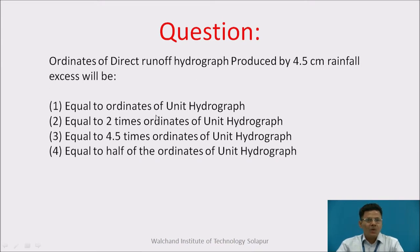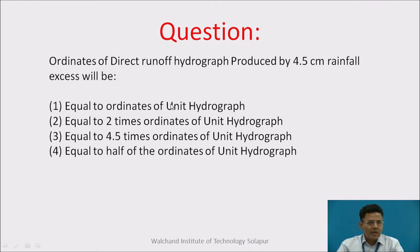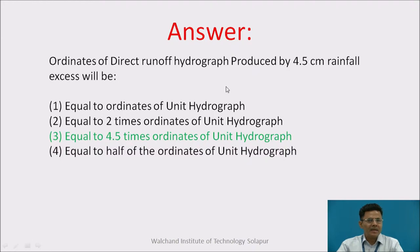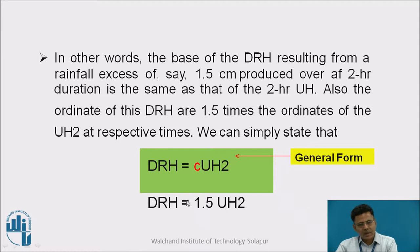A small question: ordinates of the direct runoff hydrograph produced by 4.5 centimeter rainfall excess will be — option 1: equal to ordinates of unit hydrograph; option 2: equal to 2 times ordinates of unit hydrograph; option 3: equal to 4.5 times ordinates of unit hydrograph; option 4: equal to half of the ordinates of unit hydrograph. The answer is obvious — it will be equal to 4.5 times the ordinates of the unit hydrograph, as we have seen in this formula.